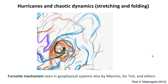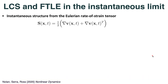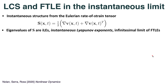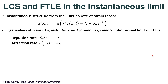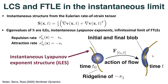We can also look at LCS and finite time Lyapunov exponents in an instantaneous limit, meaning we don't need to integrate particle trajectories — just an instantaneous snapshot of the velocity V. We calculate these instantaneous structures from the Eulerian rate of strain tensor S. The eigenvalues of S are instantaneous Lyapunov exponents, or ILEs, and they are the infinitesimal limit of FTLEs. The repulsion rate is the largest eigenvalue of S, giving the repelling FTLE in an instantaneous limit. The attraction rate, the smallest eigenvalue, provides the negative of the backward time FTLE.